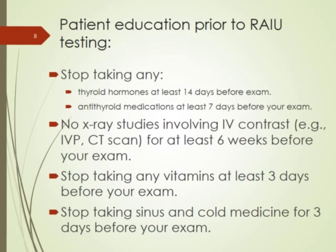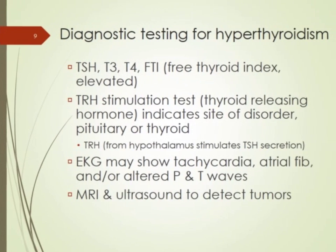For someone with hyperthyroid, besides the radioactive iodine test and TSH/T3/T4 panel, there is also the TRH test — thyroid stimulating hormone — done to identify malfunctions in the hypothalamus or the thyroid itself. On EKG, you'll see altered P or T waves, usually elevated, and of course the cardiac arrhythmia: atrial fibrillation. MRI and ultrasound are used to check for any tumors present.